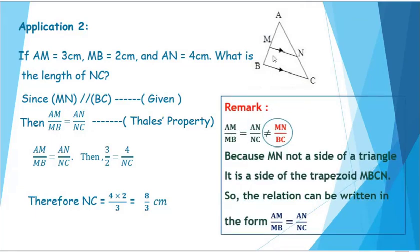Remark: AM over MB equals AN over NC, not equal to MN over BC, because MN is not a side of the triangle. It is a side of the trapezoid MBCN. So the relation can be written in the form AM over MB equals AN over NC.